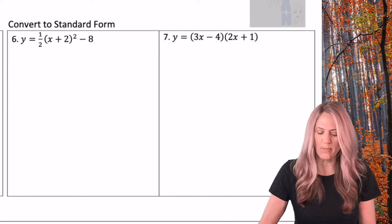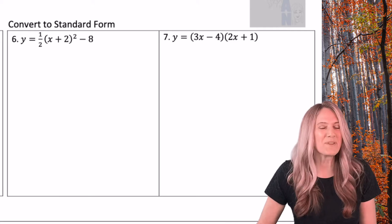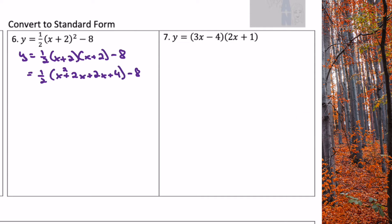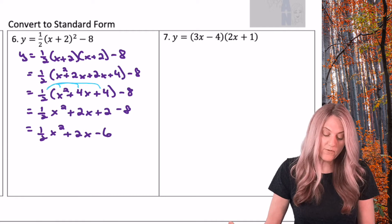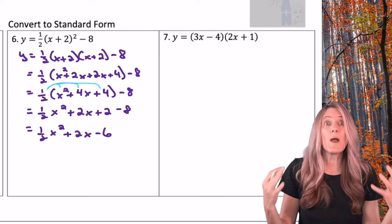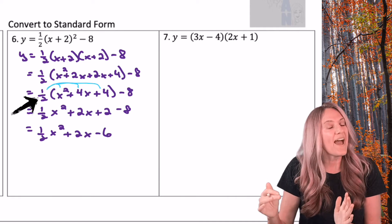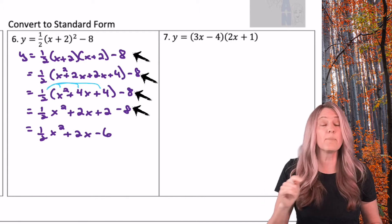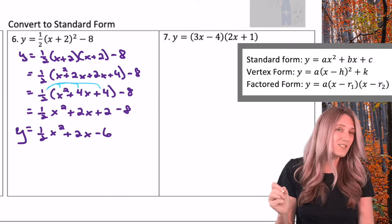Next we're converting to standard form — we've practiced this a little before. Pause and check your work; be careful with notation and remember order of operations. Going from vertex form to standard, be careful to write (x plus 2)(x plus 2) — don't try to do it in your head, there are too many mistakes. Then distribute that one half throughout the trinomial, keeping that negative eight along the whole way. If it's not written on every step, that's incorrect notation. Final answer: y equals one half x squared plus 2x minus 6.